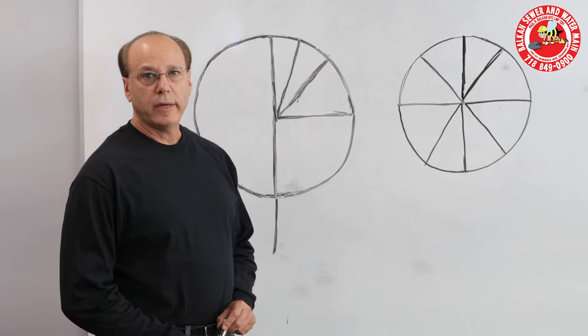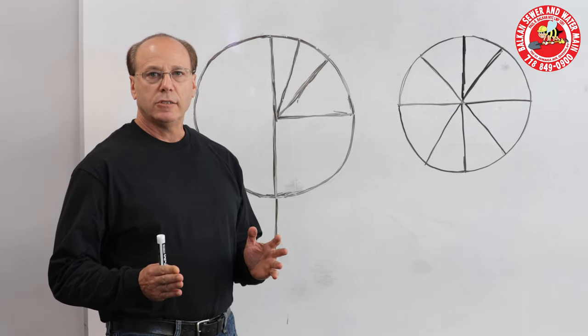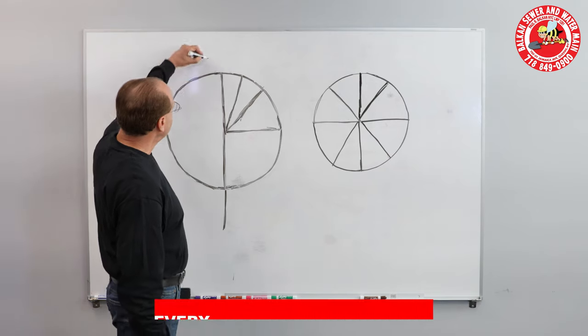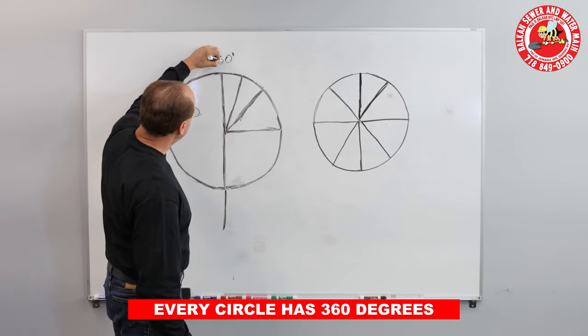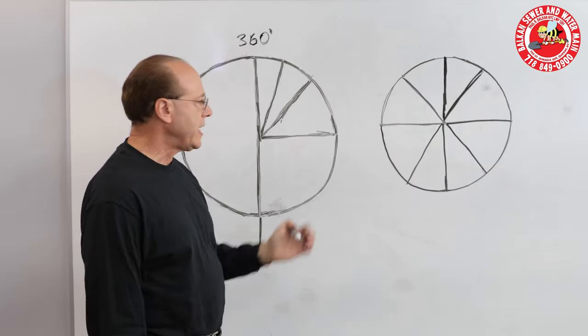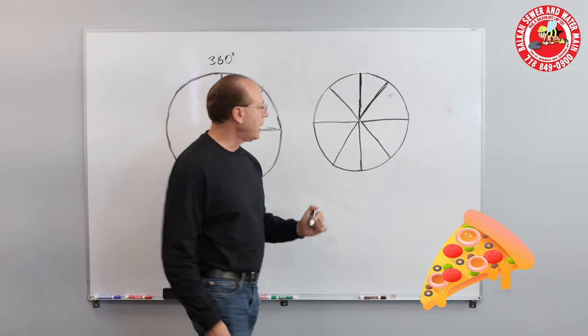I believe the easiest way to explain a fitting, because a bend really is based upon a circle, and every circle has 360 degrees to it. So if you make believe you take a pie—now I'm from New York, so it's going to be a pizza pie—what's your favorite pie?